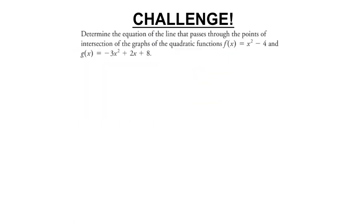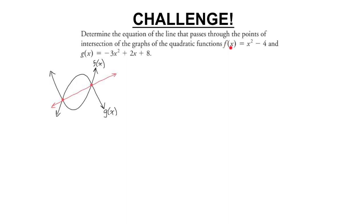Now a challenge problem. Determine the equation of the line that passes through the points of intersection of two quadratic functions, f(x) and g(x). You have two parabolas intersecting each other: f(x) opens up and g(x) opens down. They intersect at two points, and we want the equation of the line through those two points of intersection. This is quite challenging — pause the video and try it if you're up for it.